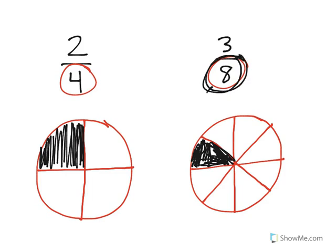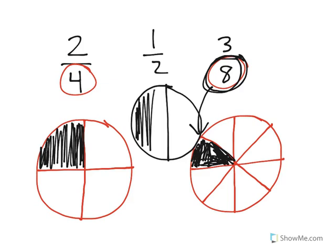the larger the denominator, the smaller the pieces will be. So if we have 1 half and we draw a circle, 1 half would actually be the largest piece because 1 half is broken into only two pieces.